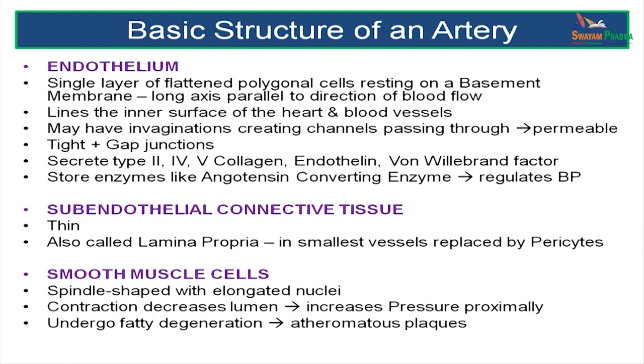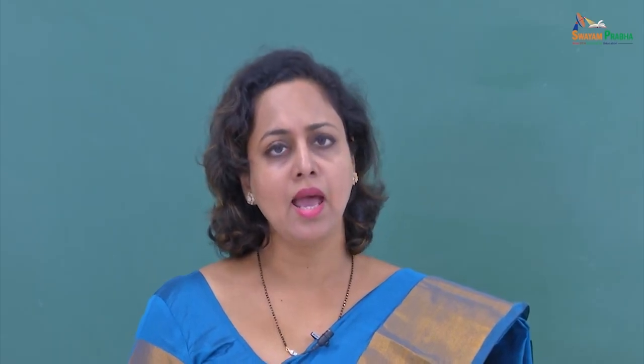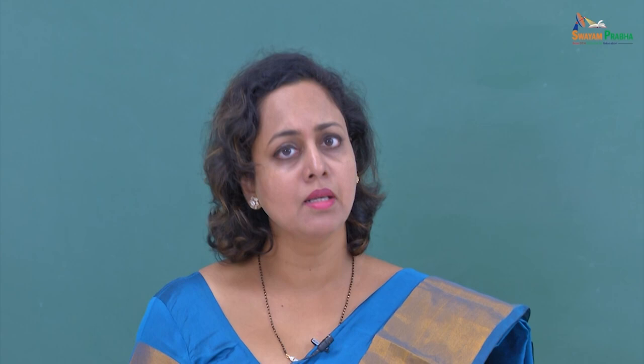The subendothelial connective tissue is thin, also called the lamina propria, and in the smallest vessels it is replaced by cells called pericytes. The smooth muscle cells are fusiform and run concentrically across the length of the blood vessel; their contraction decreases the luminal diameter, narrowing the lumen and increasing the pressure proximally. These smooth muscle cells are the ones that undergo fatty degeneration and can change into forming an atheromatous plaque.